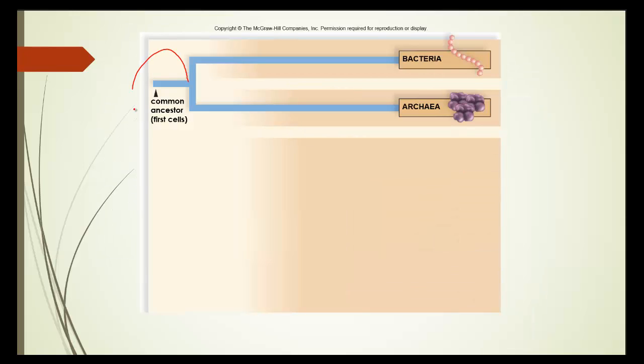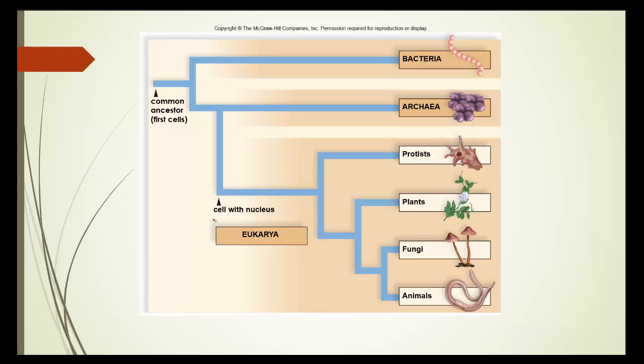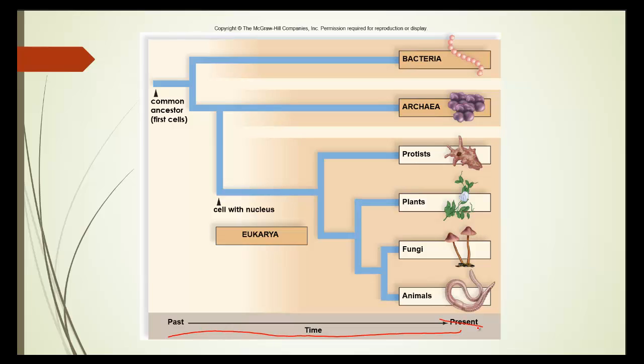So we have a common ancestor here with the first cells. This is where it first starts to break apart. Then as time goes on, it becomes more and more complex. The eukarya has the first cells with the nucleus. And then this is then broken down further. You'll notice that as time goes on from past to present, it breaks off further and further down.